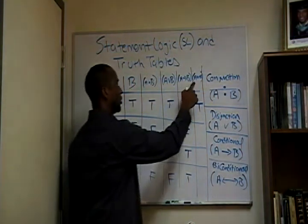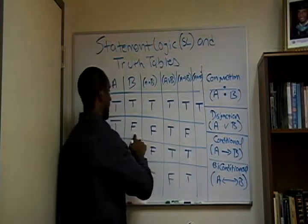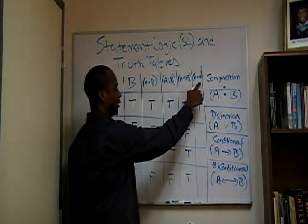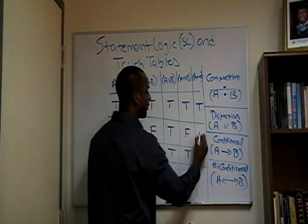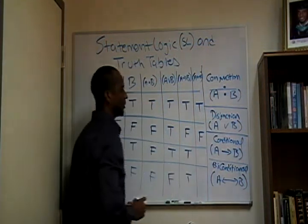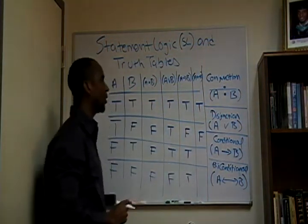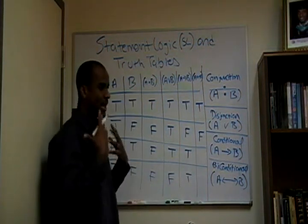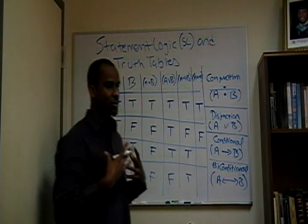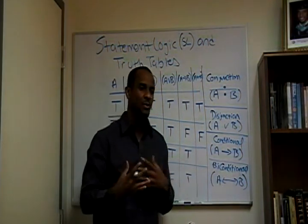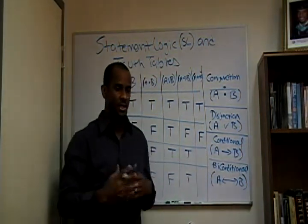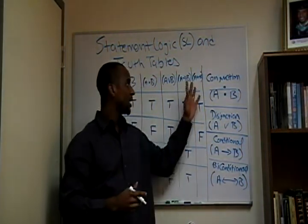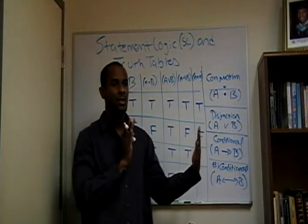If A is true and B is false, that becomes false. Why is it that that becomes false? The way that I think of biconditionals — the easiest way for me to explain it without getting too technical — is think of the biconditional as a mirror.